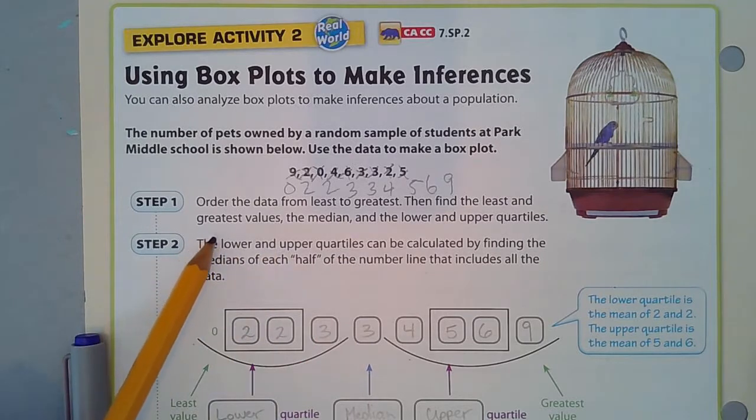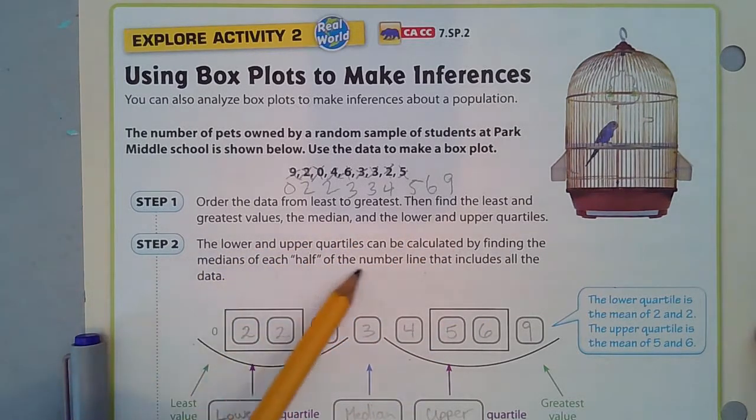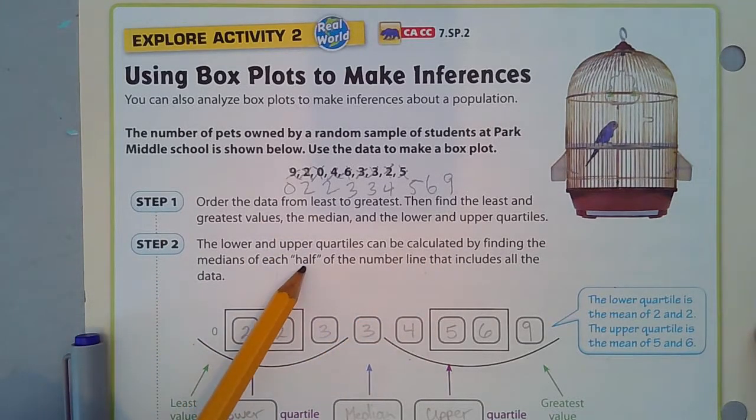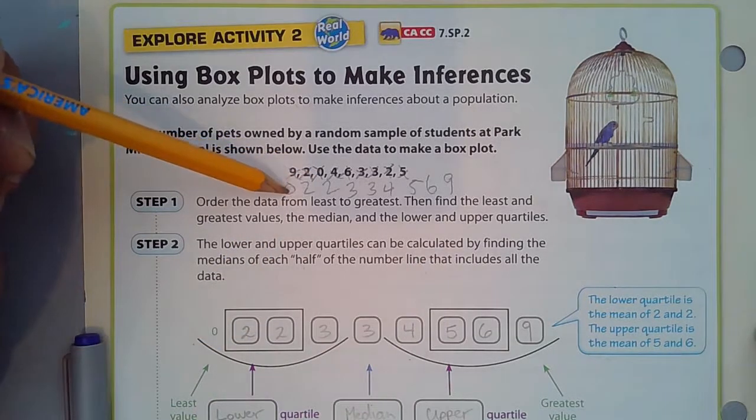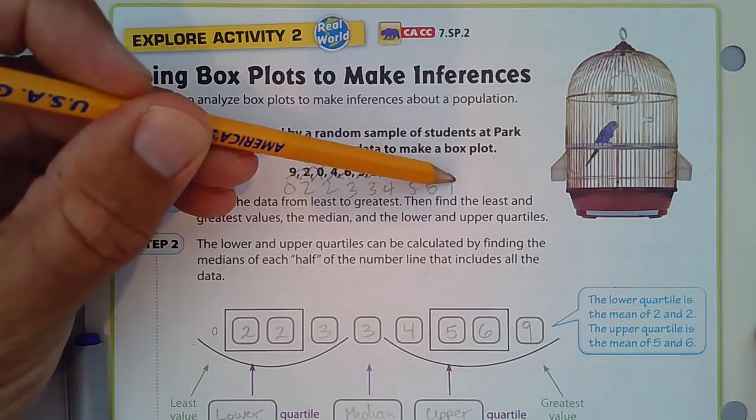The least and greatest quantities, the median and the lower and upper quartiles. If you remember, the median is the middle number. One, two, three, four, five, six, seven, eight, nine. One, two, three, four, five. This is the median right here.